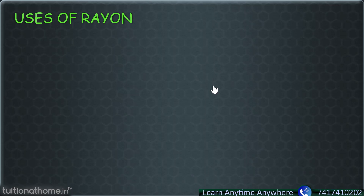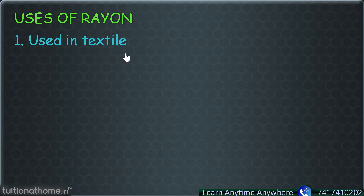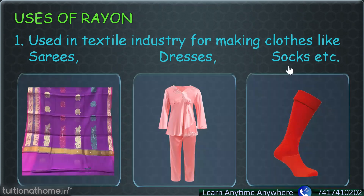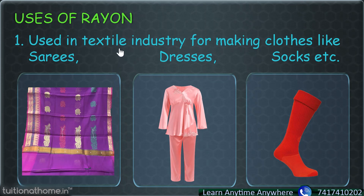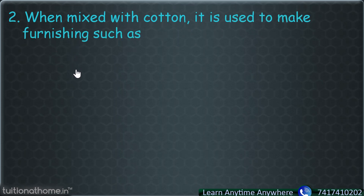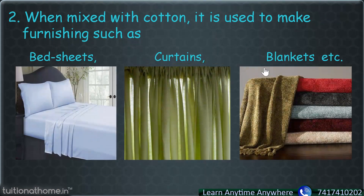Moving forward, if we learn about some of the uses: rayon is used in the textile industry for making clothes like sarees, dresses, and socks. The textile industry takes full advantage of this fiber which is natural but very cheap. Apart from clothes, when mixed with cotton, it is used to make furnishings such as bedsheets, curtains, and blankets.